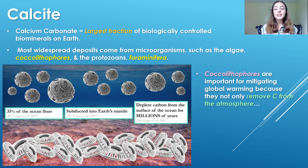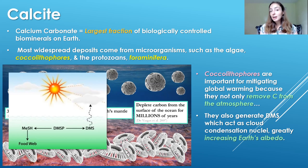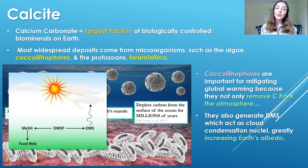These organisms might even be important for mitigating global warming because not only do they remove carbon from the atmosphere by photosynthesizing, but they also produce something called DMS or dimethyl sulfide. This acts as a cloud condensation nuclei — clouds can form because of it — and this greatly increases Earth's albedo. Albedo is surface reflectivity, so reflecting sunlight really helps to cool down Earth.